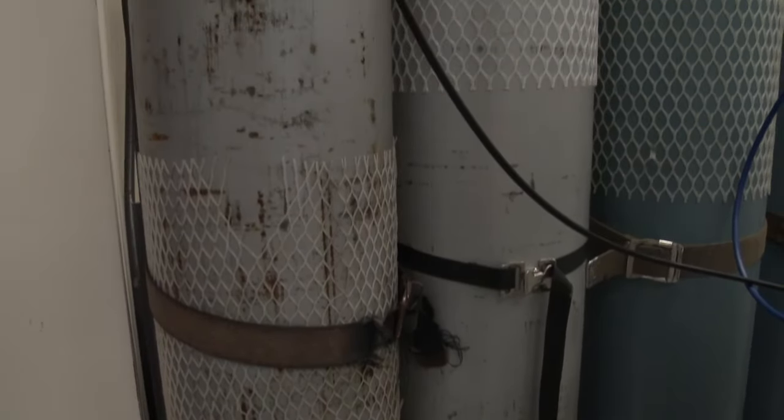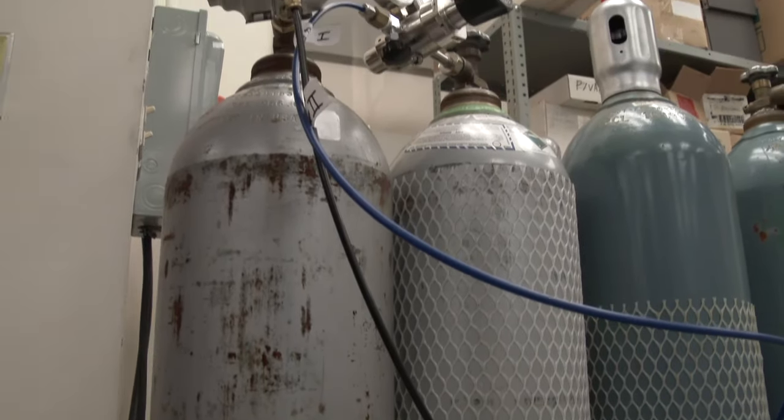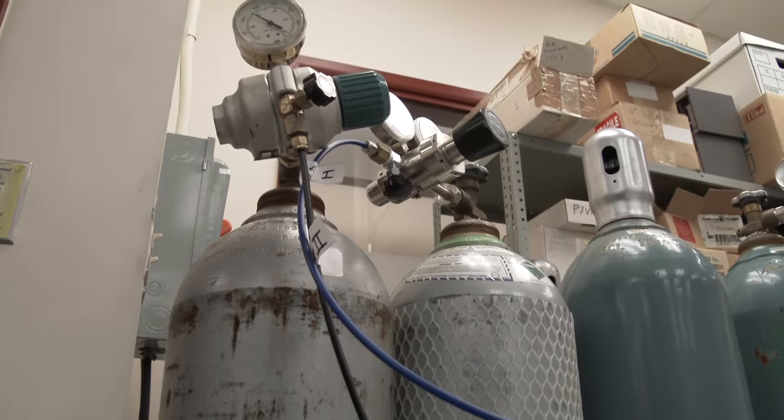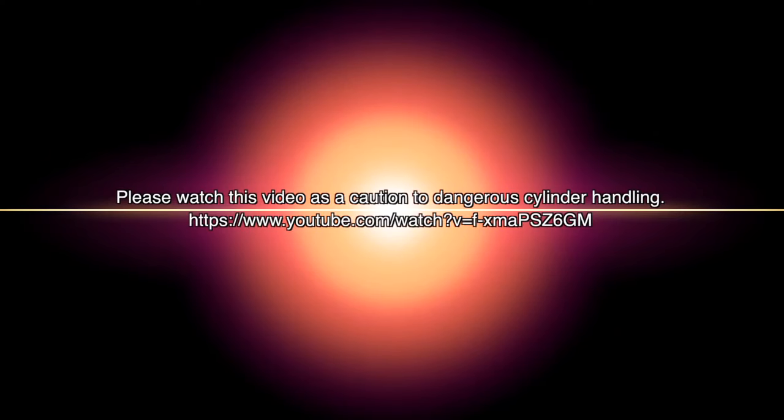Many mass spectrometers, especially electrospray mass spectrometers and GCMS mass spectrometers, also use gases: nitrogen, helium, argon, and hydrogen in some cases. These gases are generally supplied from cylinders. These cylinders are under high pressure, and the gases need to be controlled by gauges and contained within tubing suitable for this high pressure. Please watch this video as a caution to how dangerous cylinder handling can be.